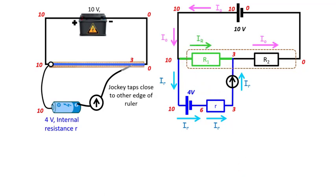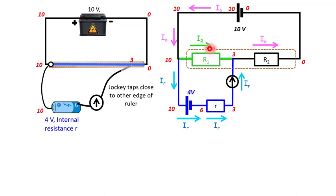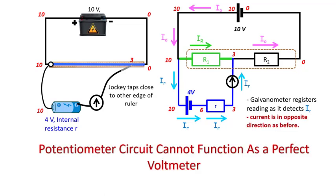As with the previous case, the potentiometer is still drawing a current from the cell it is trying to measure. However, what is interesting is that the current through the galvanometer is now in the opposite direction compared to the previous case. Also, the currents through the whole length of wire are not constant, so the potential difference is not proportional to L along the whole wire. Therefore, we cannot determine the PD across R1 from the wire length, and this potentiometer circuit is still not functioning as a voltmeter.